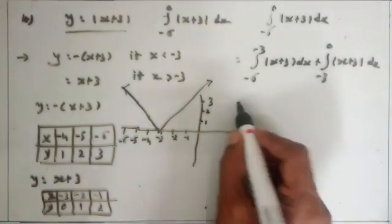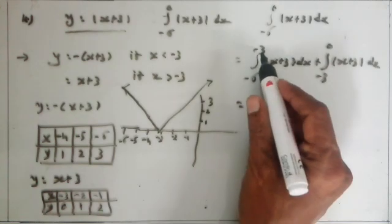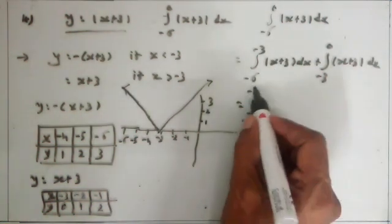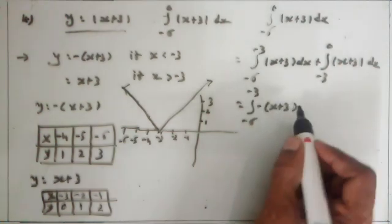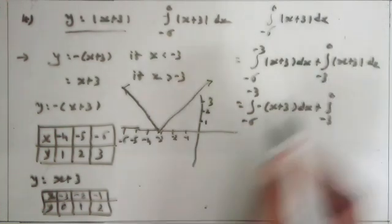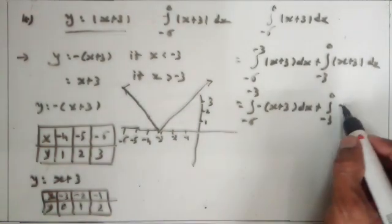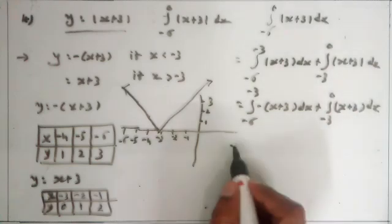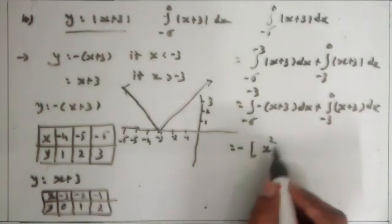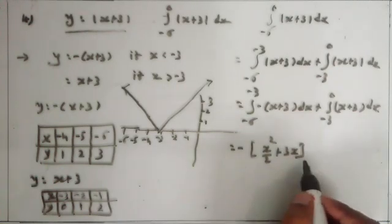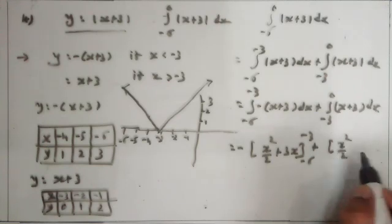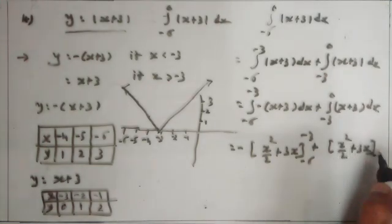In minus 6 to minus 3, this portion becomes negative, so it becomes minus(x plus 3) — removing the magnitude by applying a negative sign. Plus, in minus 3 to 0 this portion becomes positive, so it is (x plus 3) dx. So it is equal to: minus times the integral giving x raised to 2 upon 2 plus 3x, applying limit minus 6 to minus 3; plus the integral giving x raised to 2 upon 2 plus 3x, applying limit minus 3 to 0.